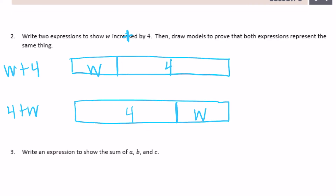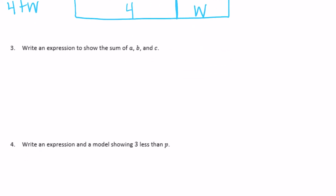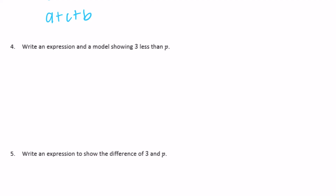Number 3: write an expression to show the sum of a, b, and c. We're adding all three, so there are different correct answers: a plus b plus c, c plus b plus a, a plus c plus b — any order works because of the commutative property. There are more possible orderings as well.